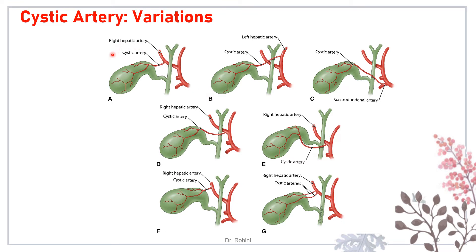There are numerous variations of the cystic artery. Most commonly it arises from the right hepatic artery, but it can arise from the left hepatic artery, or from the gastroduodenal artery. It may run in front of the common hepatic duct, form a loop, run below the cystic duct, or there may be two separate cystic arteries arising directly from the right hepatic artery. Surgeons must keep all these variations in mind at the time of ligation during cholecystectomy.